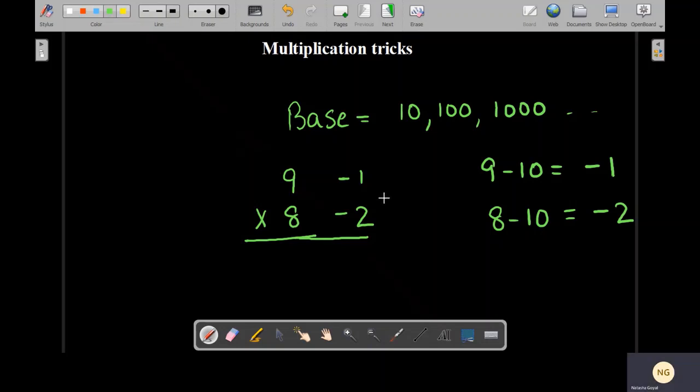So these numbers tell us how far the number is from the base. 9 is 1 unit away from the base and 8 is 2 units away from the base. Now we'll make a partition over here. On the left hand side, we'll write the sum, and on the right hand side, we'll write the product.